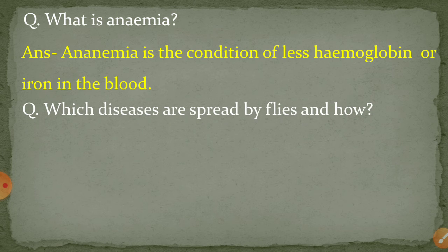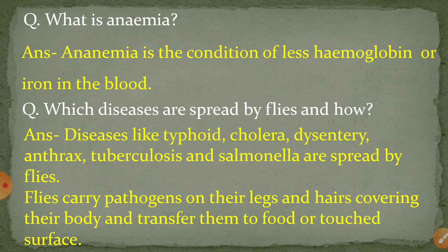Next question: which diseases are spread by flies, and how? Diseases like typhoid, cholera, dysentery, anthrax, tuberculosis, and salmonella are spread by flies. Flies carry pathogens on their legs and hairs covering their body, and transfer them to food or touched surfaces.